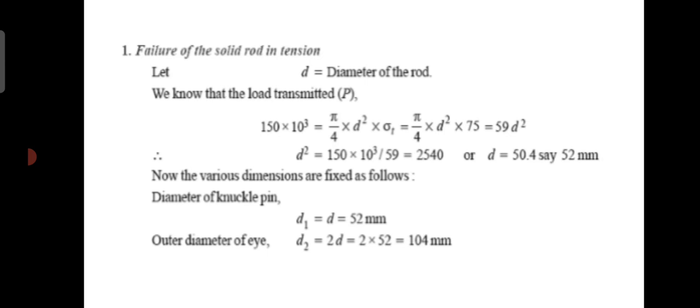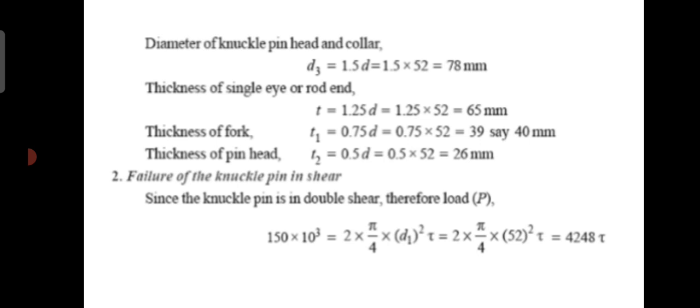Now the various dimensions are as follows. The diameter of the knuckle pin d1 equals d, so d1 equal to 52 mm. Outer diameter of the eye d2 equal to 2d, so d2 equal to 2 × 52 equal to 104 mm. Diameter of knuckle pin head and collar d3 equal to 1.5d, substituting d equal to 52 gives d3 equal to 78 mm.